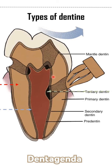3. Tertiary dentine: it is also called reparative or sclerotic dentine. It forms on the pulp-dentine border as a protective response to trauma, attrition, abrasion, or restorative procedures. Areas of dentine where the tubules have been filled by mineralization.